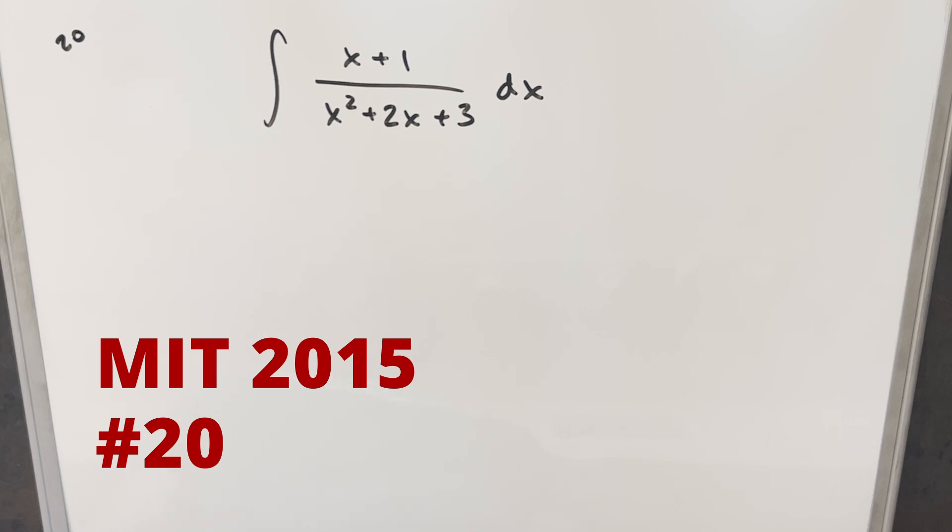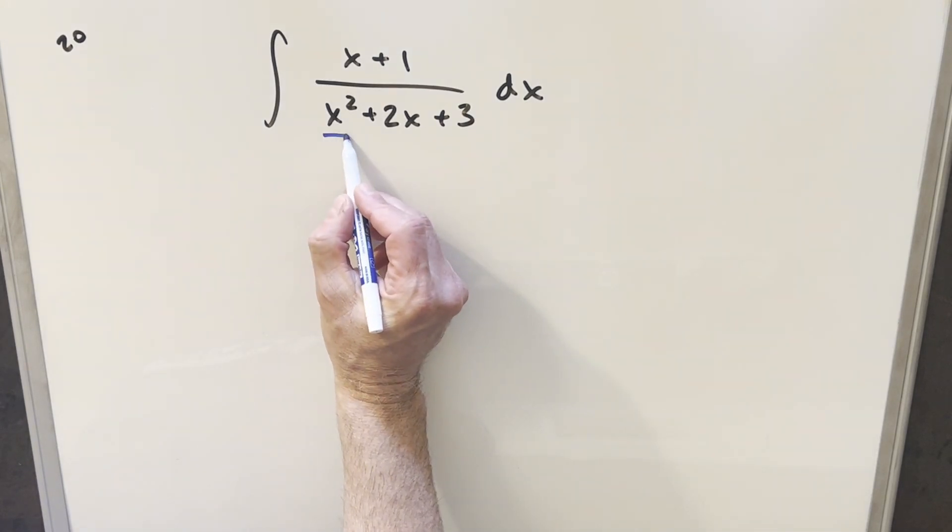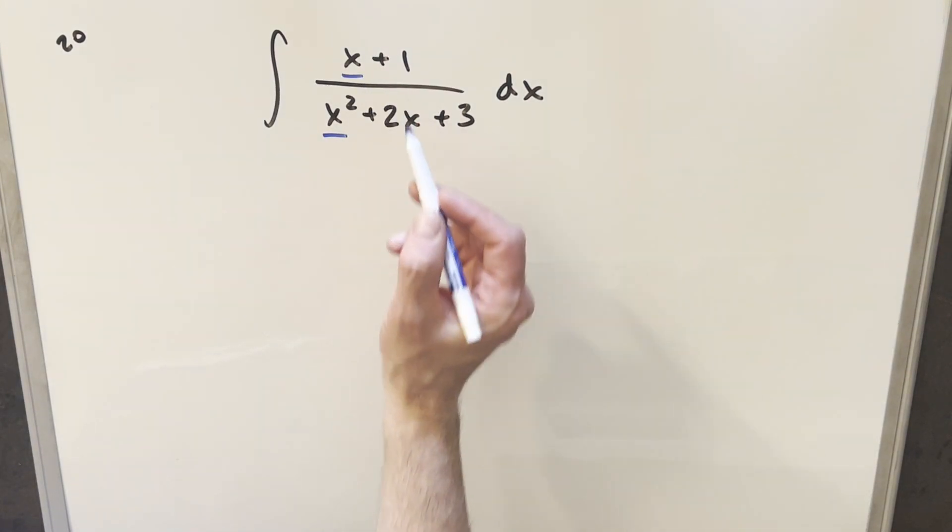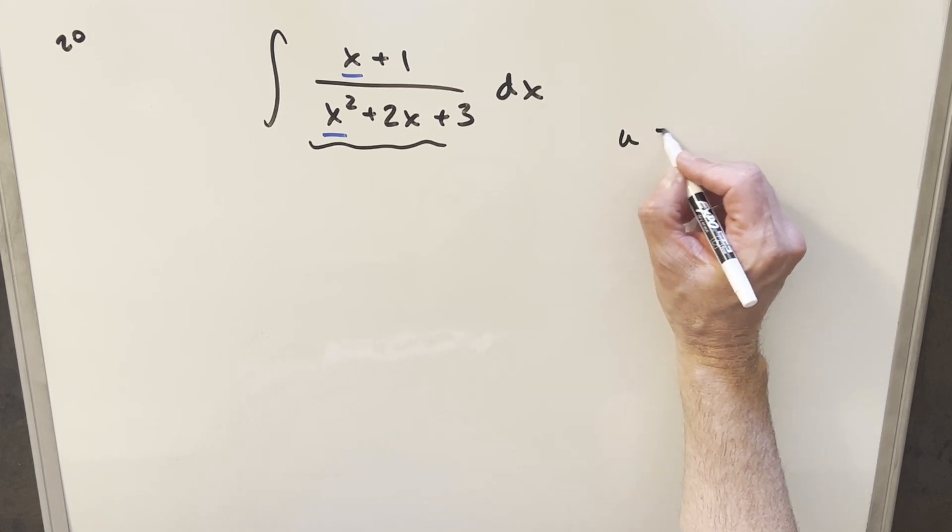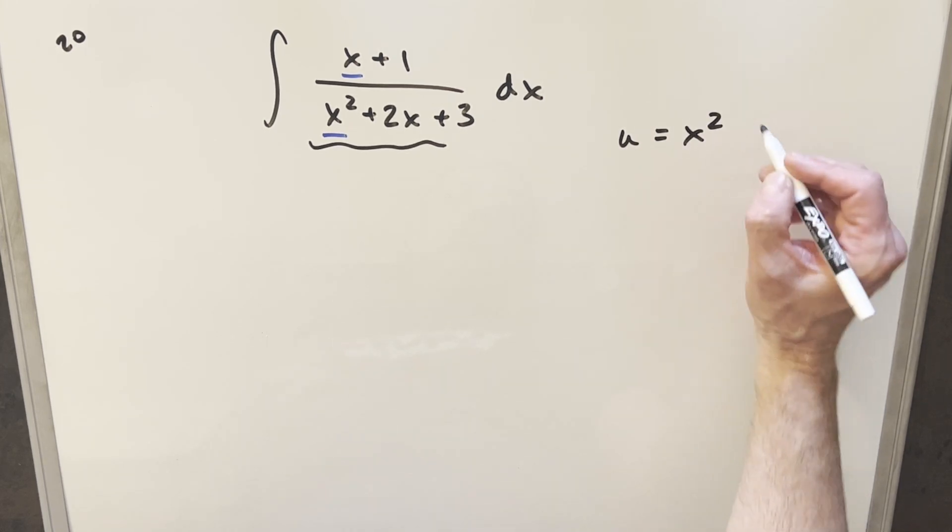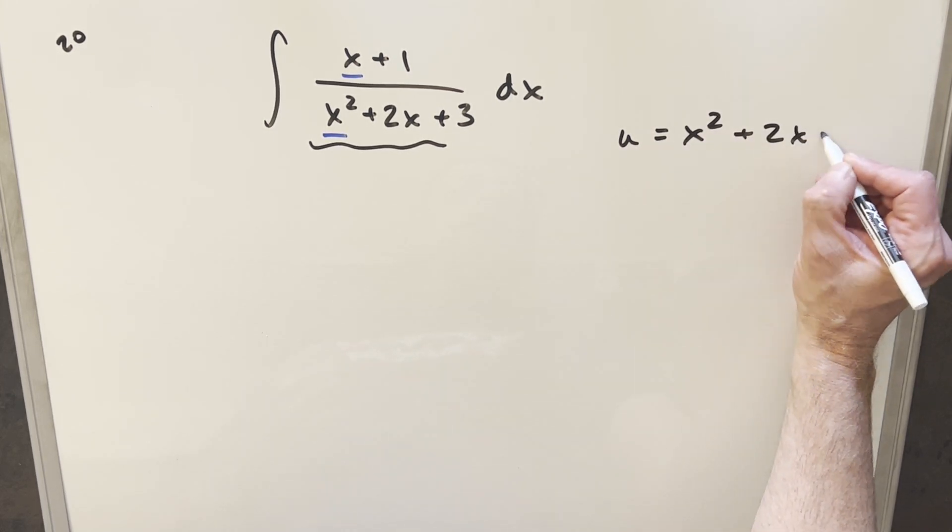We have the integral of x plus 1 over x squared plus 2x plus 3 dx. To get started with this, I'm noticing in the denominator we've got x squared here, we've got an x term here. I don't think it's going to work perfect, but what we can try on this is a u substitution. What I want to do is let's just make the whole denominator the u. So we'll set this up.